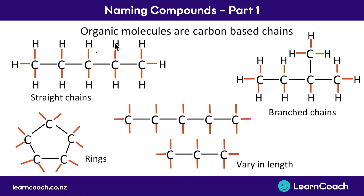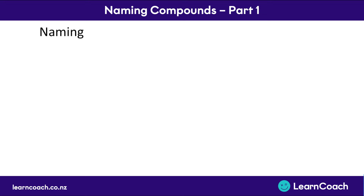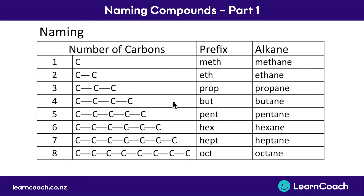Now that you understand organic molecules - they're carbon-based chains with extra hydrogens to fill up the spots - we're going to look at all the variations you can get and how to name them. When naming these molecules, the first thing you need to know is the prefix, which tells you how many carbons are in the molecule. One carbon is meth, two is eth, three is prop, four is but. Five becomes pent - same as a pentagon. Six is hex, same as a hexagon. Seven is hept, and eight is oct - same as an octagon or an octopus with eight legs.